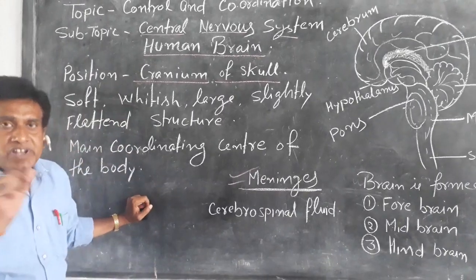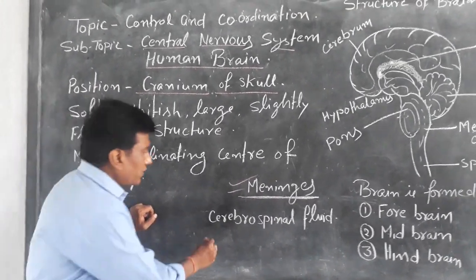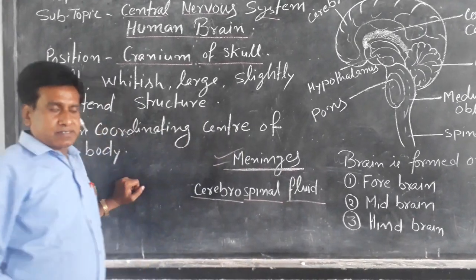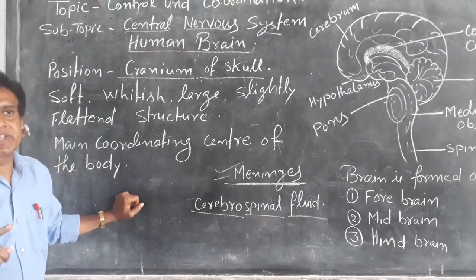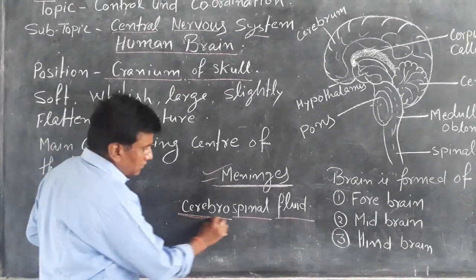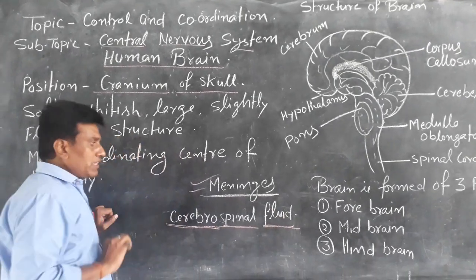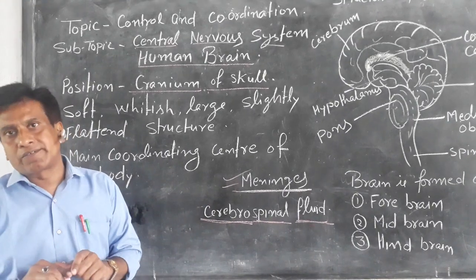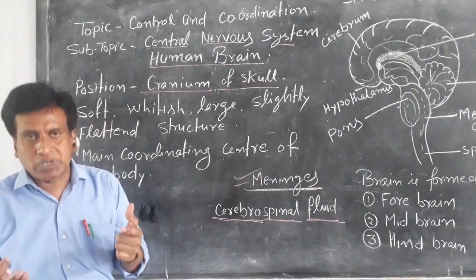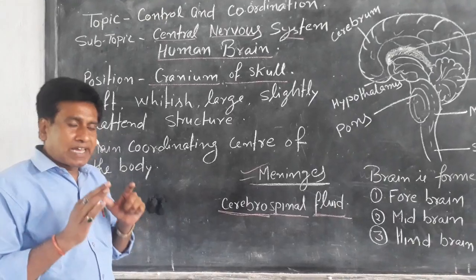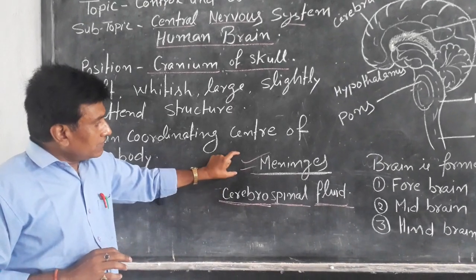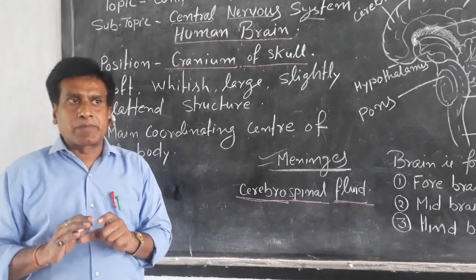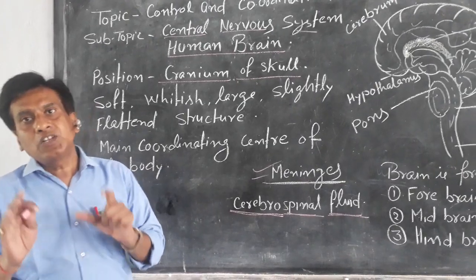This membrane is filled with a kind of liquid called cerebrospinal fluid. Meninges and cerebrospinal fluid protect our brain from mechanical injury and mechanical shock.